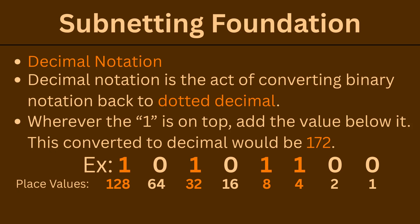Decimal notation is how we see addresses. Dotted decimal is in the format of a 4-octet, 32-bit address. We can convert a binary address back to dotted decimal — wherever there is a 1, we add that value based on the binary place value chart; wherever there is a 0, we skip that value.